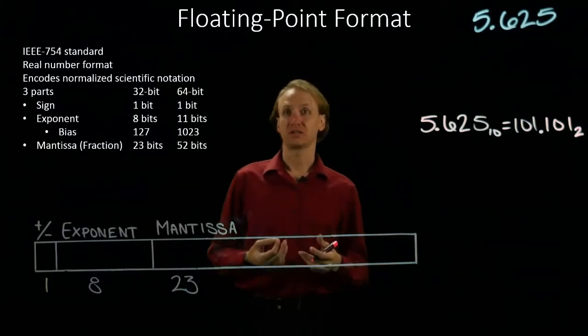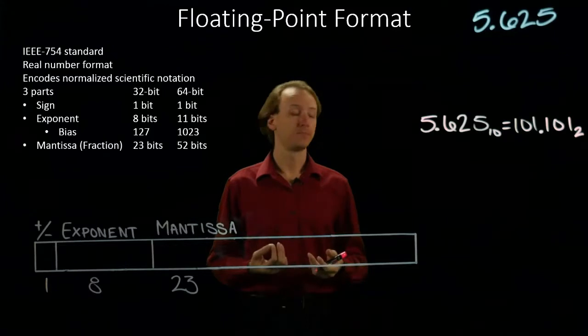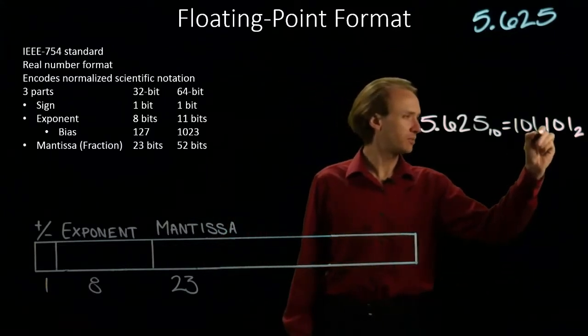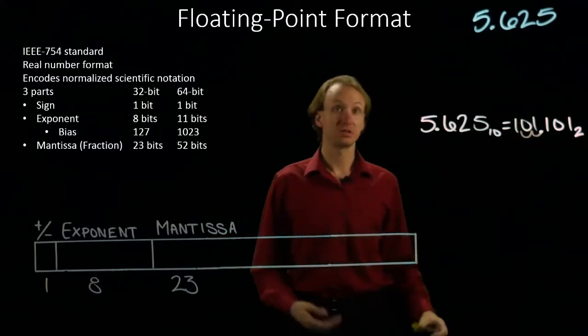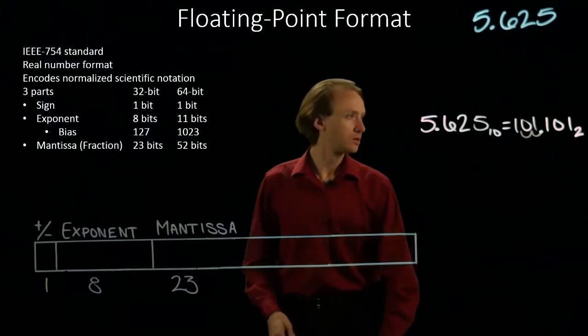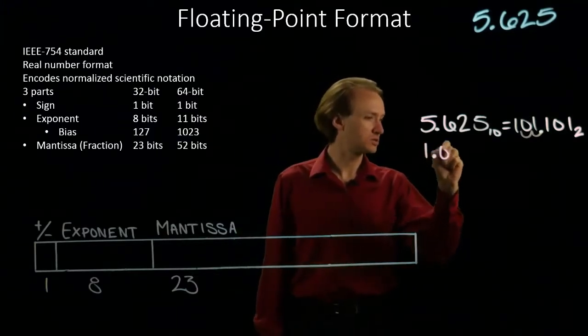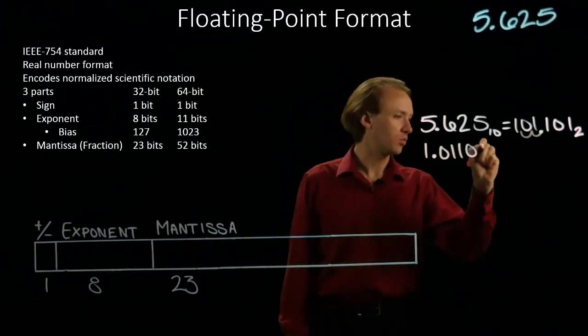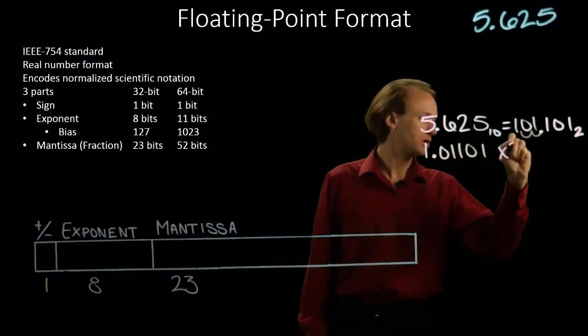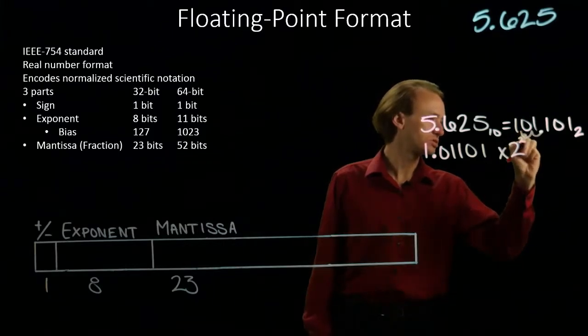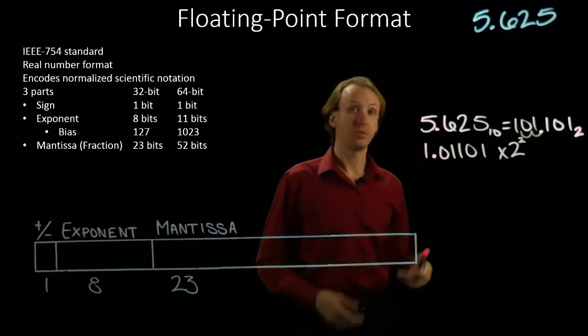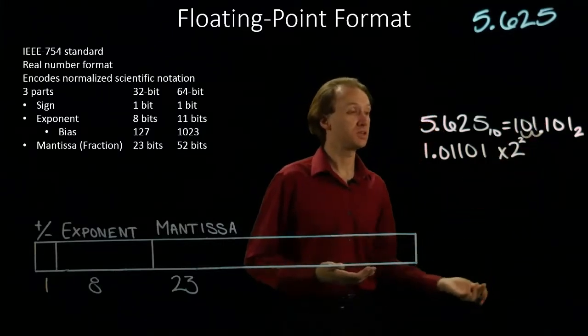Next, I need to represent this in normalized scientific notation. So I'm going to want to move my binary point two places to the left. This will give me 1.01101 times 2 squared. I moved it two places to the left, so my exponent is a 2.